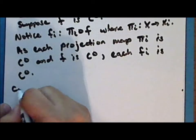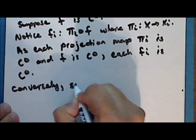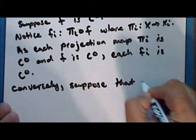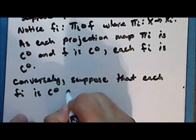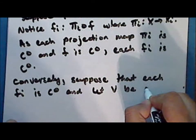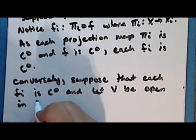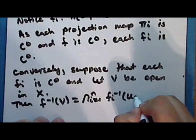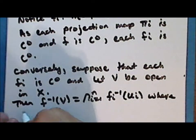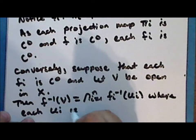Conversely, suppose that each coordinate function is continuous, and let V be an open set in the space X. Then, by the previous theorem, the inverse image of the set V under the map f is the intersection of the inverse images under the map f sub i of the set U sub i, where each set U sub i is open in the corresponding space X sub i.